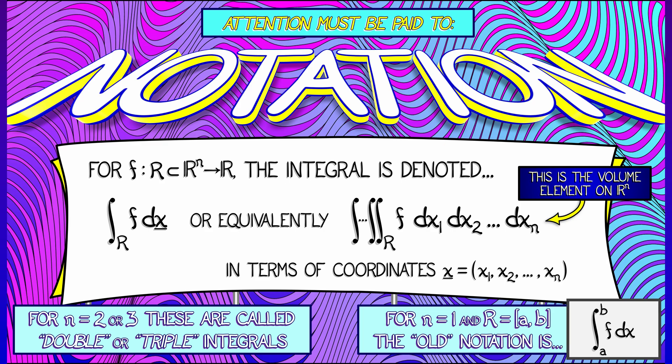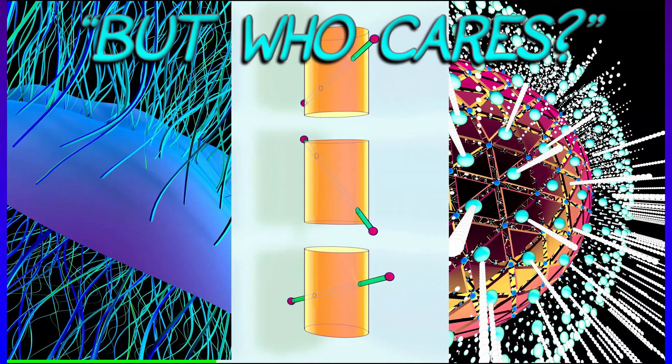In the case where n equals 1 and our domain of integration is connected, say an interval from A to B, then the old notation that we used for this definite integral had those limits expressed as a subscript and superscript, respectively. We're going to need the more general notation for more general domains.